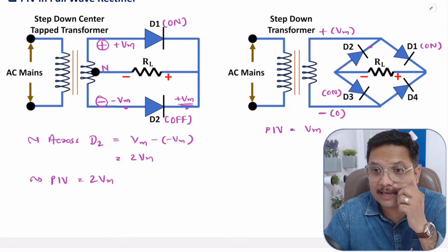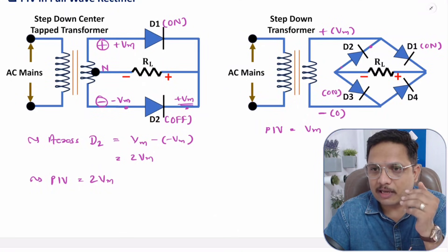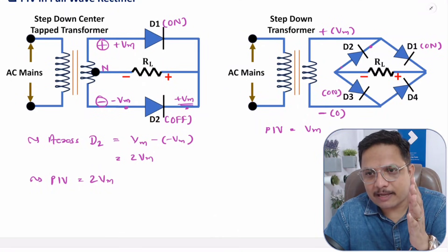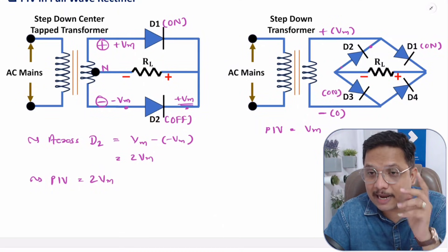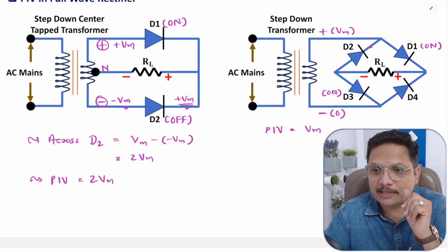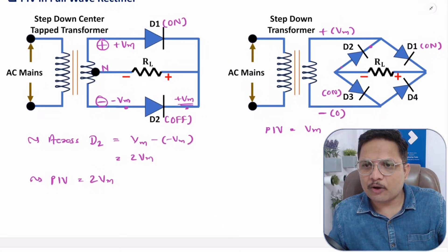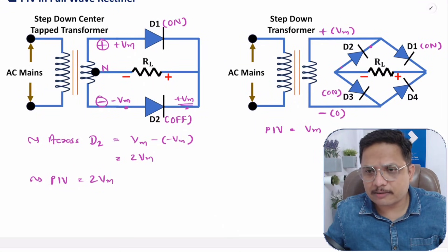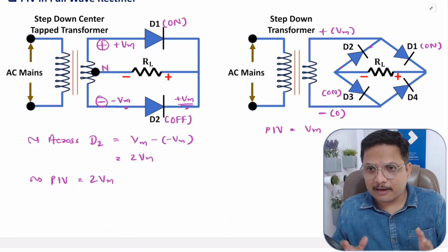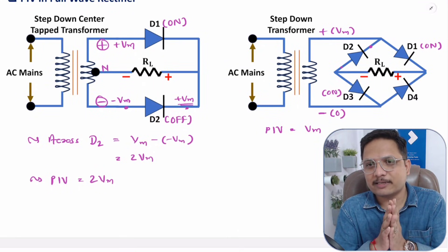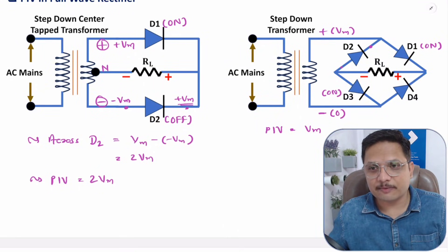Understanding PIV is important because the diode must be rated for that voltage — if breakdown occurs in reverse bias, the diode will be damaged. I hope you have understood this. If you have any questions, please note them in the comment section. Thank you so much for watching this video.